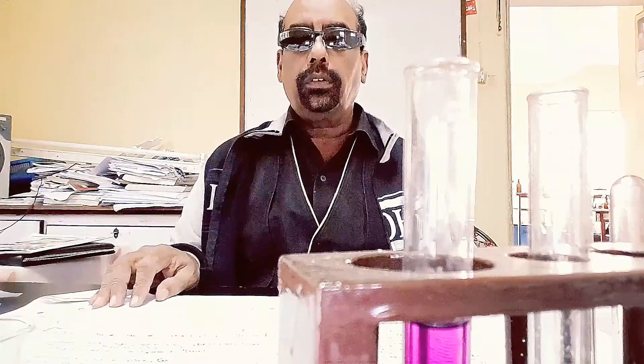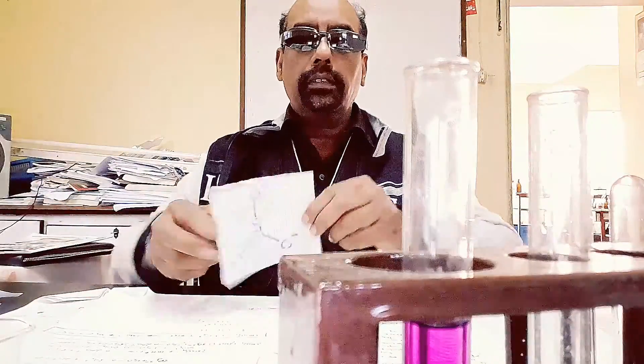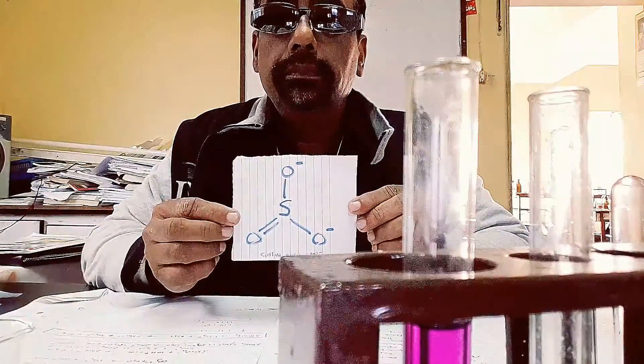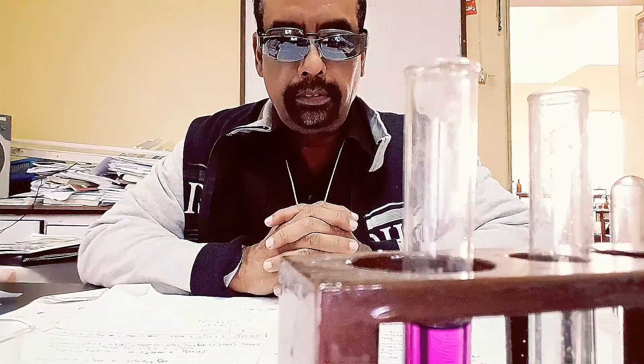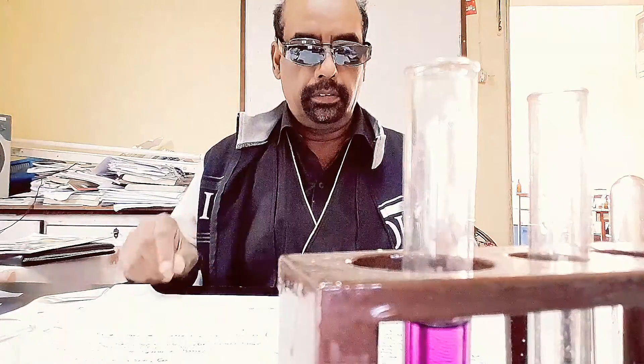Good morning everybody. Today we'll discuss the test for sulfite. Sulfite has the formula SO₃²⁻. Sulfites are decomposed by acids, and in this decomposition sulfur dioxide is liberated.